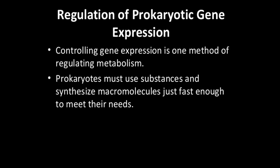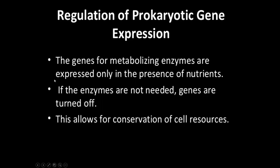How does this regulation take place in prokaryotes? Controlling gene expression is one method of regulating metabolism. Whenever metabolism has to be regulated, it happens naturally that gene expression is controlled. Prokaryotes must use substances and synthesize macromolecules just fast enough to meet their needs. Prokaryotes are very fast growing organisms — that's why people want to target E. coli for expression, because they can synthesize things very fast. The genes for metabolizing enzymes are expressed only in the presence of nutrients.